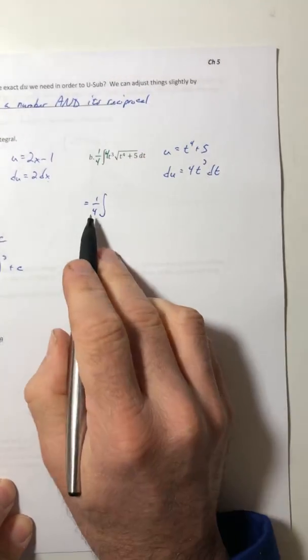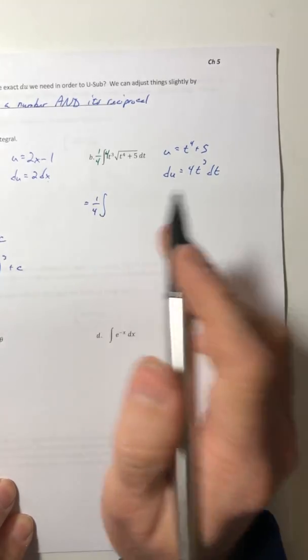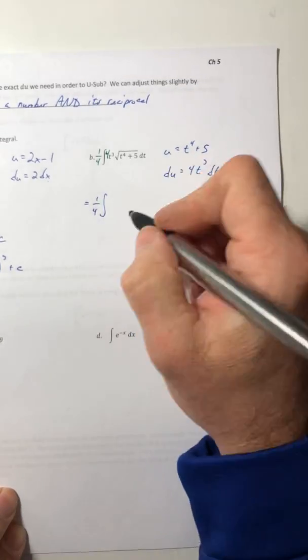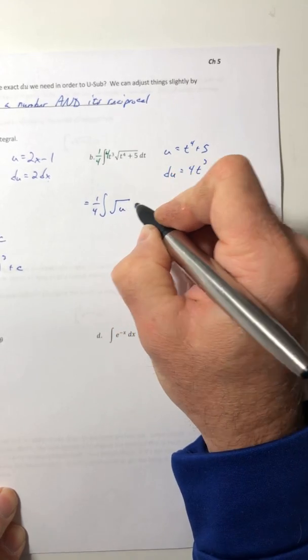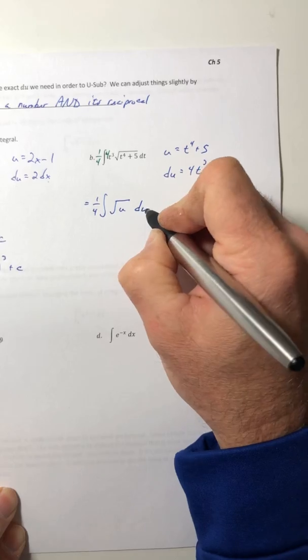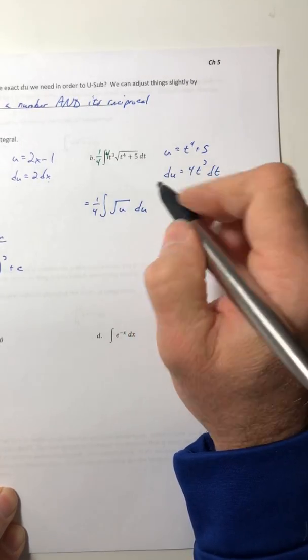And then again, the number outside that you put here, just leave it alone and then just do your u-subs for the rest of it. So root u, and then the 4t to the third dt is the du.